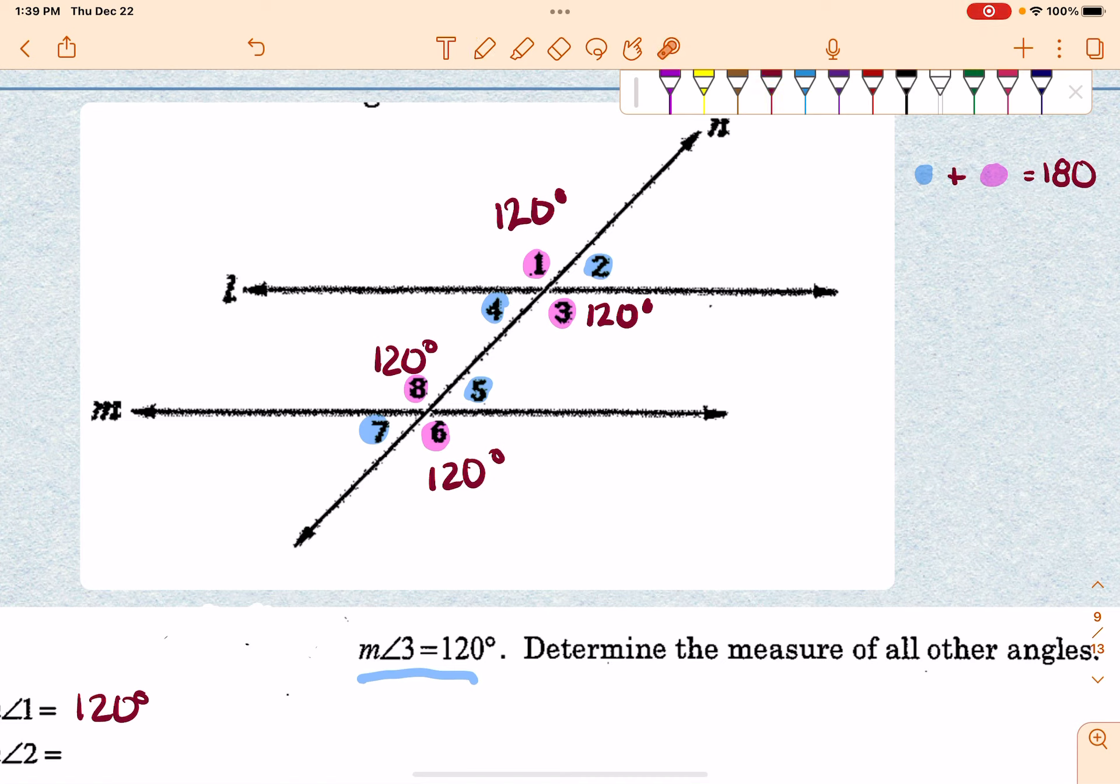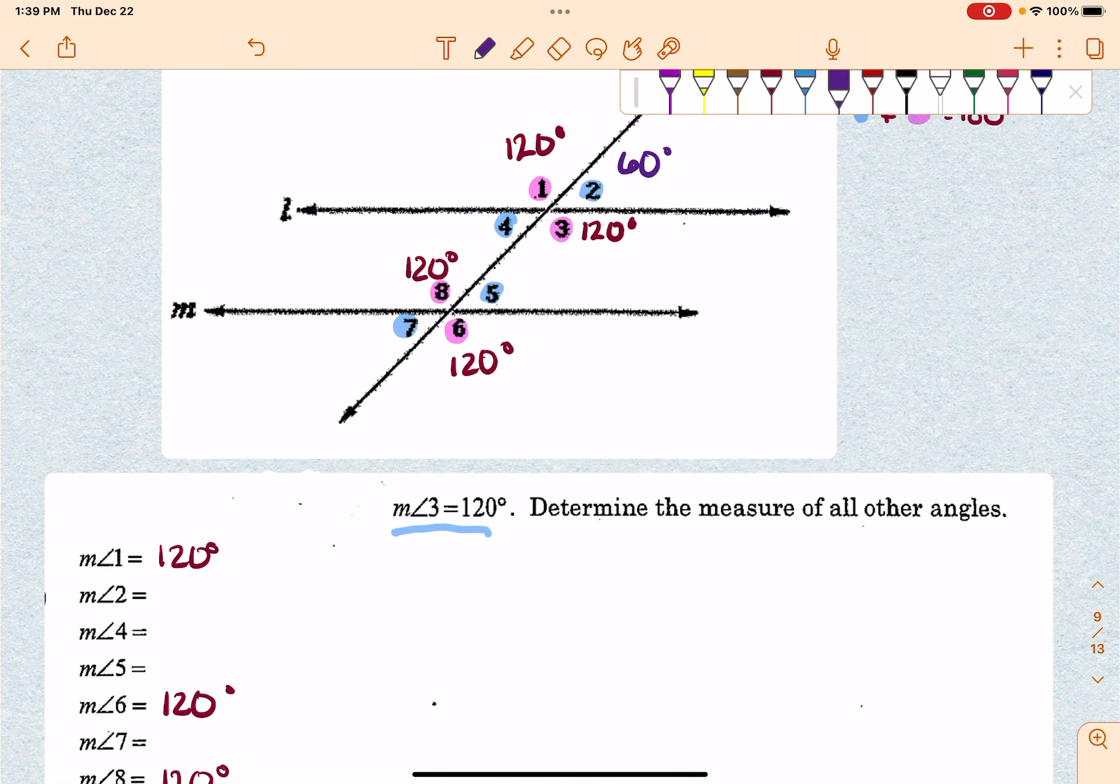So that means if this is 120, then this one over here is going to have to be 60. So that means angle 2 is 60 degrees. That means any other blue one is going to be 60 as well. So that means 4 is going to be 60. 5 is going to be 60.